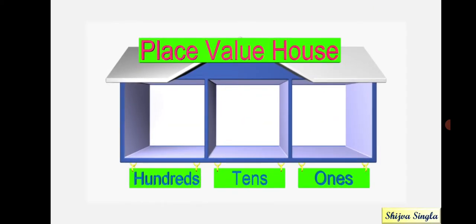Welcome to the place value house. Here, we will talk about ones, tens and hundreds. These are like three rooms over here. There are some rules in this that have to be followed. One of the rules says that you can have only one digit in each room.